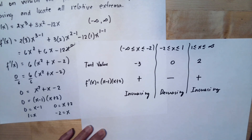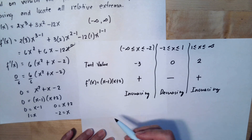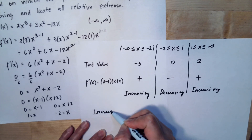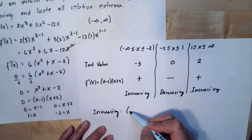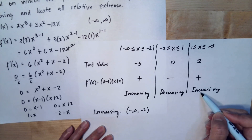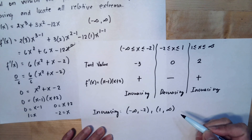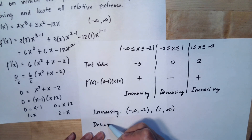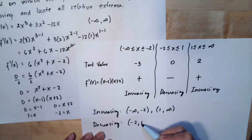Therefore, the function is increasing on (negative infinity, negative 2) and (1, positive infinity), and decreasing on (negative 2, 1).